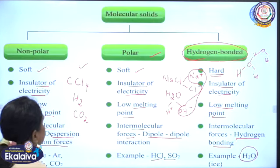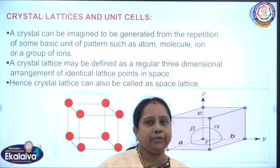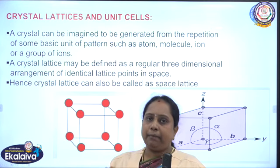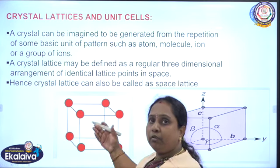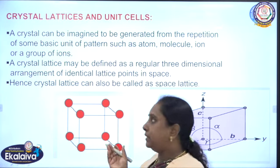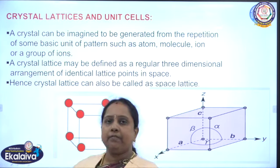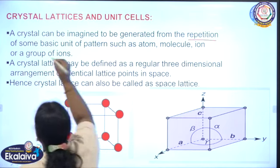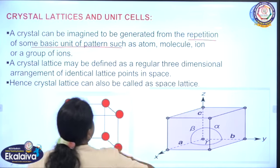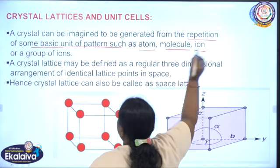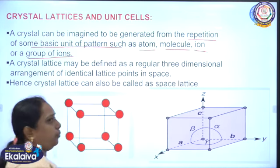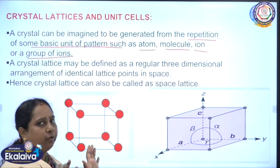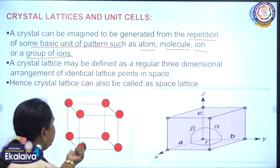Next we will learn about crystal lattice and unit cells. A crystal is imagined to be created from the repetition of some basic units of patterns such as atoms, molecules, ions, or a group of ions. A lattice is a complete structure — imagine a cube. The corners of this cube are called lattice points, and these corners are occupied by atoms.